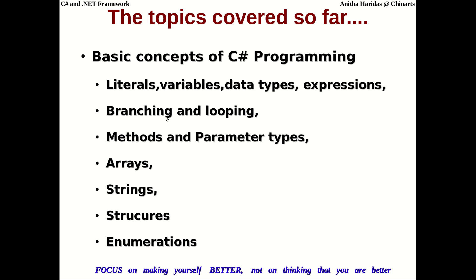In the previous classes we discussed the basic concepts of C# programming: literals, variables, data types, expressions, and an assignment on branching and looping. We also covered ways of writing a method in a class, different parameter types, arrays, and ArrayLists. We discussed three types of strings — mutable strings, immutable strings, and regular expressions.